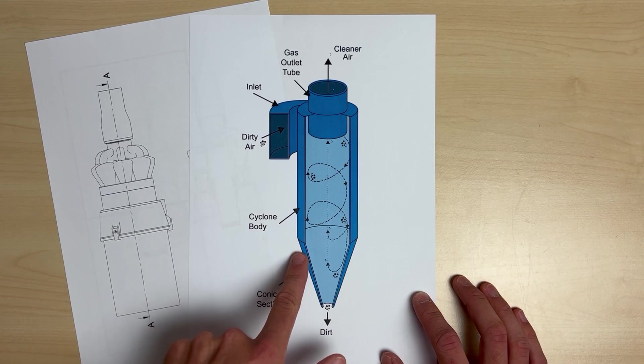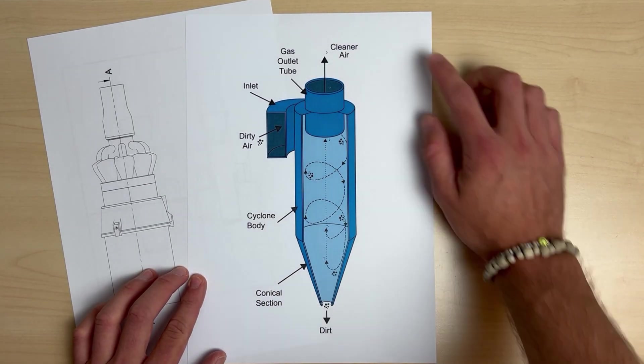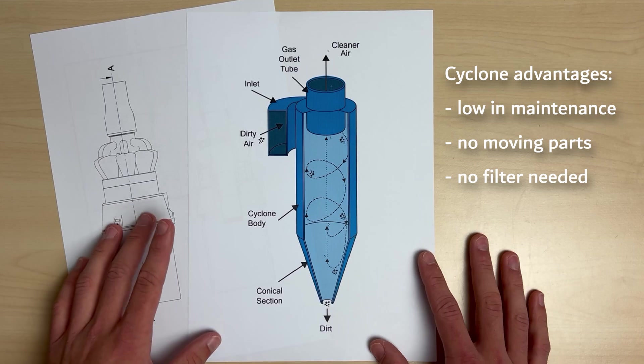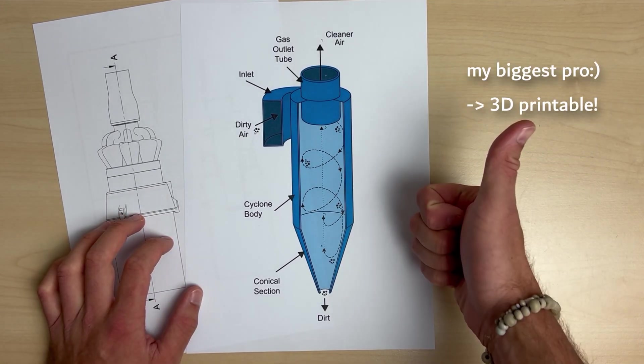This simple but effective mechanism allows cyclones to separate particles from the air without a need for filters or moving parts. They are very low maintenance, which is a big reason why they are so widely used. And another cool thing is that you can 3D print them.